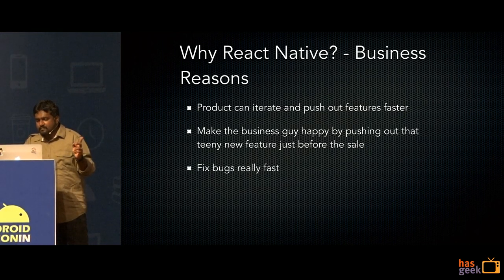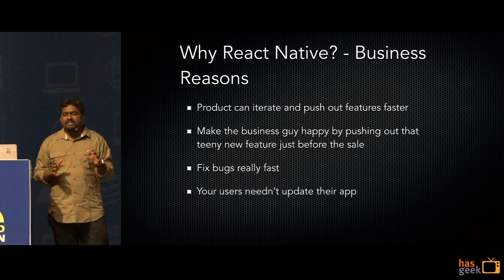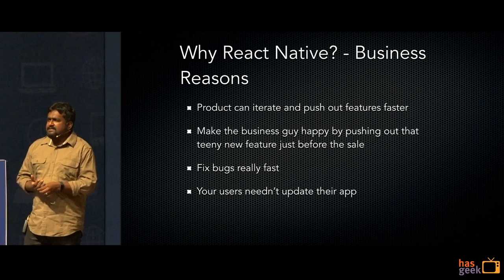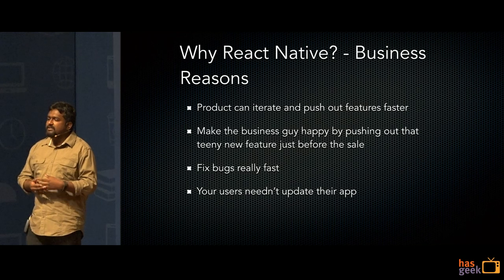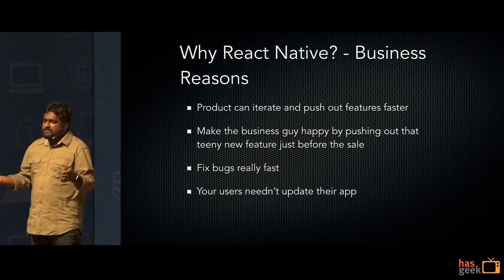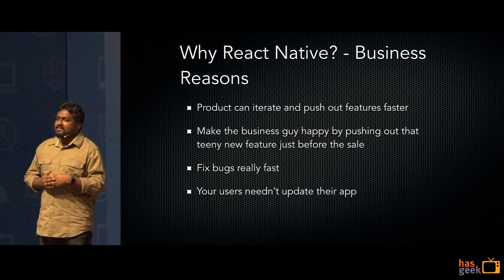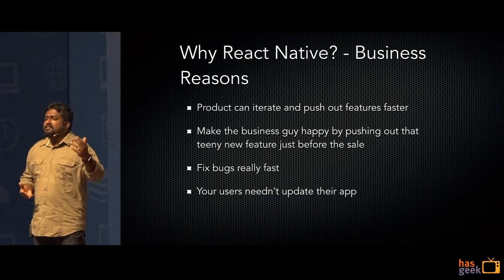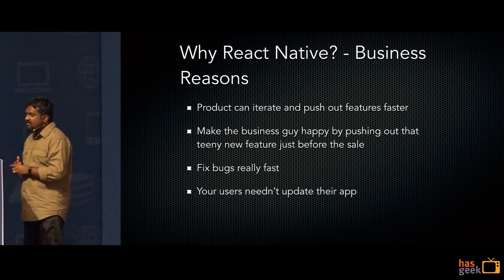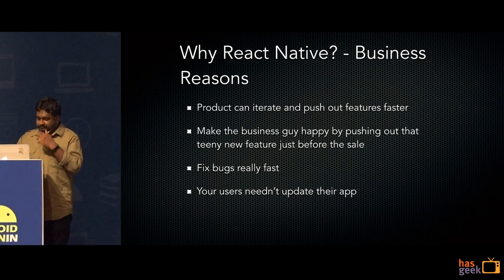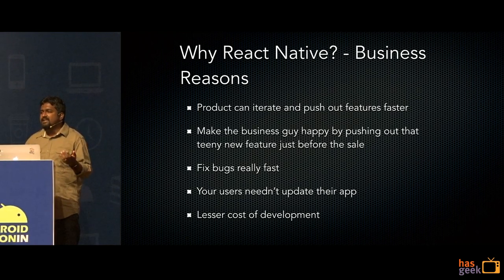You can fix bugs really fast — your users needn't update their app. We've noticed 90% of iOS users update within a week of a new release, whereas on Android we probably touched about 30% within two weeks. There's huge fragmentation of versions. React Native ensures feature parity when users don't upgrade their app. And finally, it's a lesser cost of development — given that you can churn out Android and iOS, you'd be able to do more with less.